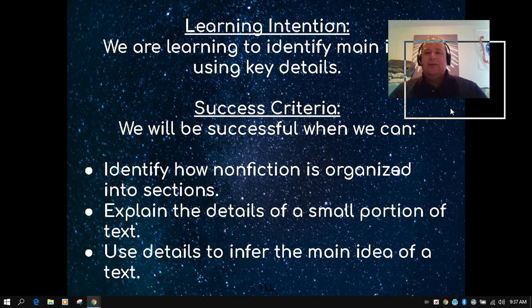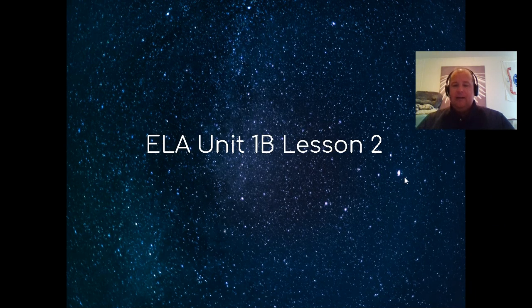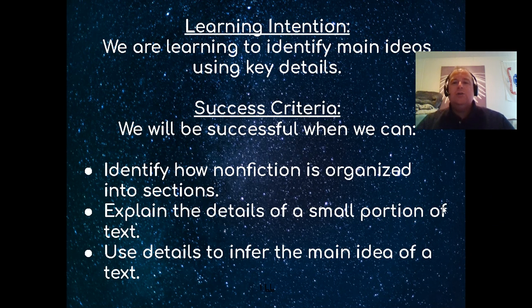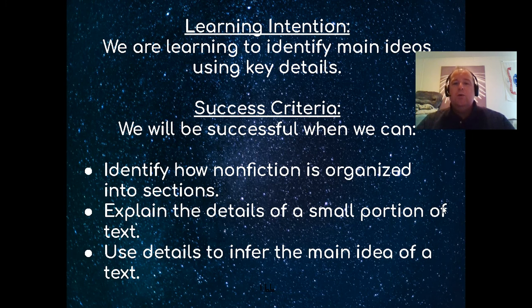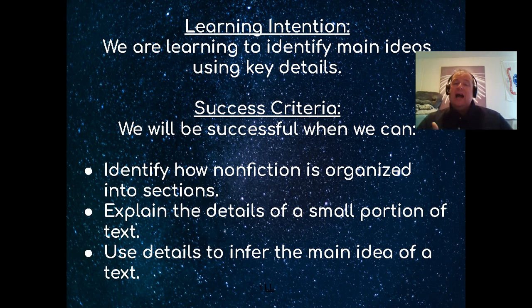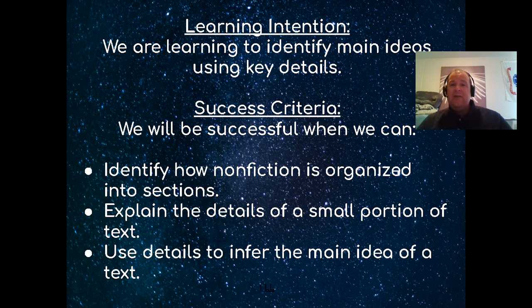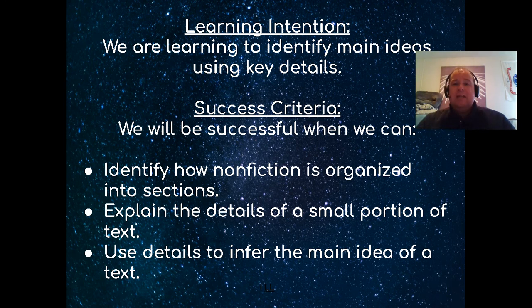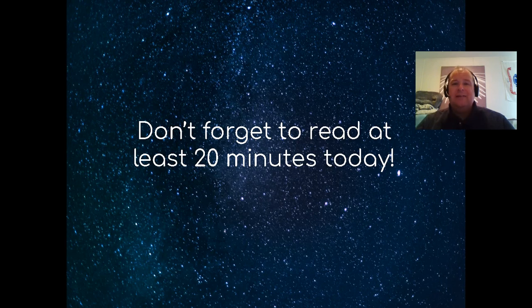Let's review our intention and our success criteria for today. We are learning to identify the main ideas using key details. We will be successful when we can identify how nonfiction is organized into sections. Did you notice that today's text, it had sections that started with the beginning, it kind of gave you an introduction to the shapes, and then it started talking about how the earth and the moon relate to each other and how they rotate around each other and how long it takes. Explain the details of a small portion of the text. You did that a little when we were talking about the different diagrams. And using details to infer the main idea of a text. That's all for today friends. Make sure to get your assignment done and don't forget to read for at least 20 minutes today for fun. Have a good day. See you tomorrow.